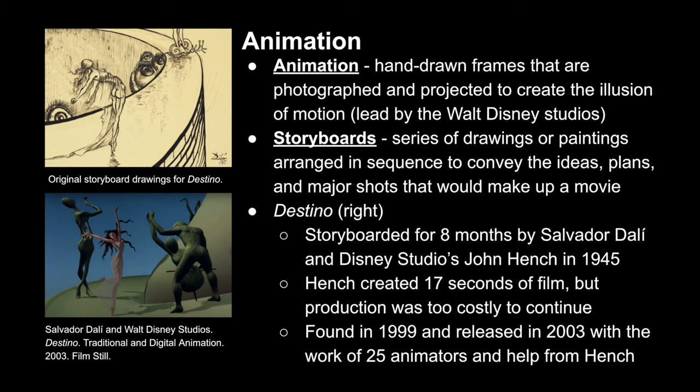Animation was another form of creating film: instead of taking photos to project, it took photos of hand-drawn frames and projected those, using the same technology to create an illusion of motion. These initial animations were led by Walt Disney Studios. In the same way that a drawing has a preliminary sketch, animation has storyboards — a series of drawings or paintings conveying the ideas, plans, and major shots of a movie. The film Destino was storyboarded for eight months by Salvador Dali and John Hench of Disney Studios.